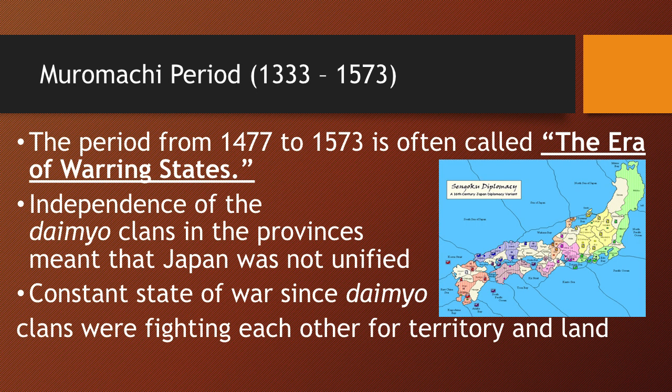From Lesson 5, the period from 1477, which marks the end of the Onin War, to 1573 is called the Era of Warring States. As you can see from the map, Japan is divided into small provinces, each led by a Daimyo warrior family. The Daimyo clans were hereditary and native to their province. The country is in a constant state of war because Daimyo clans are fighting each other for territory and land. Japan is not unified.